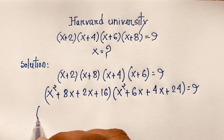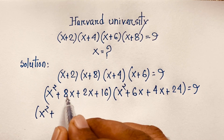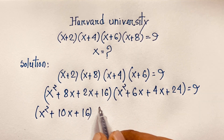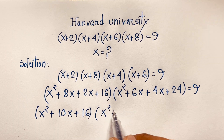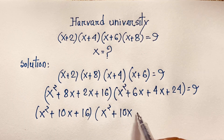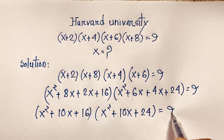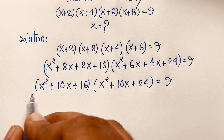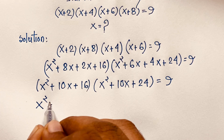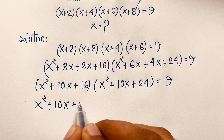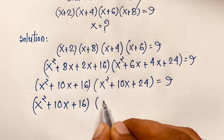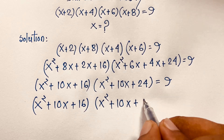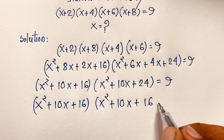Now simplifying: x²+8x+2x is x²+10x, and the constant is 16. Times x²+10x+24 equals 9. Notice the constants are 16 and 24. I adjust 24 to 16+8, so it becomes (x²+10x+16)(x²+10x+16+8) = 9.